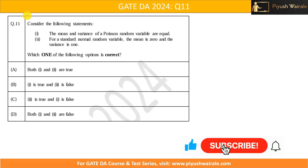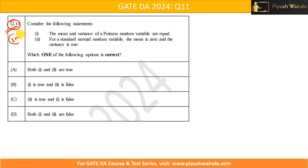Hello everyone. In this video we are going to discuss question number 11 of the GATE DA 24 exam. This question was asked for one mark — a simple question. Students generally think the GATE exam is difficult, but if you see this type of question, students ignore it while preparing. They think it's pretty easy and won't be asked in GATE, but that's not the case. All the one-mark questions are pretty simple. Let's discuss this question.